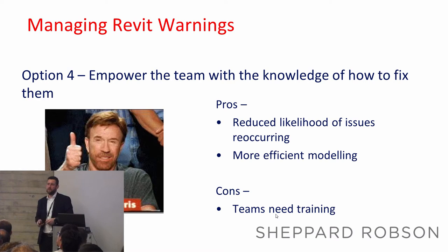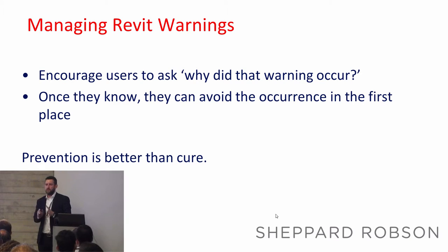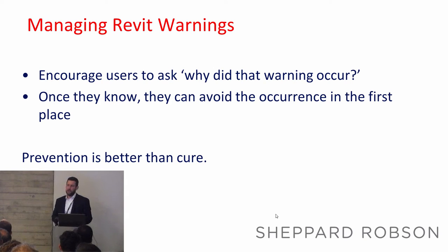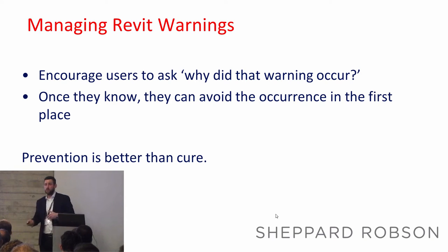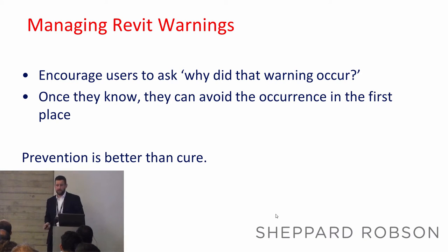The downside of option four is that people need training, which isn't necessarily a bad thing. With that approach, it's about asking your team: why did the warning occur? Once they understand why, they can start working in a way that prevents those warnings from appearing in the first place. For example, if you know you have to complete a sketch before clicking finish, that warning simply won't appear. Prevention is always better than cure.